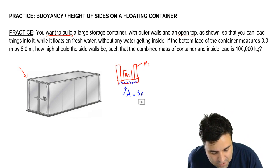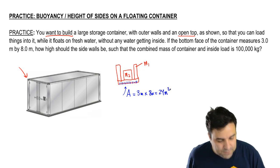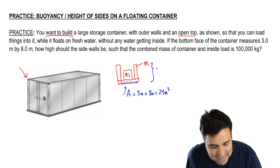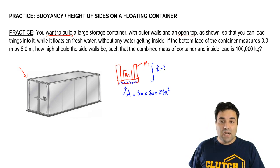So three meters by eight meters, in other words 24 square meters. And I want to know how high should the sides be, so what is the height here, so that the combined mass of the container is 100,000 kilograms?